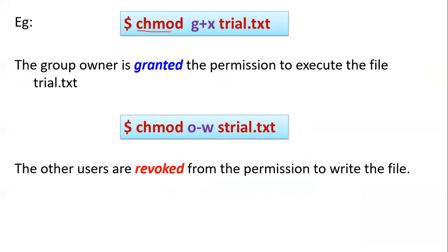Here is an example: chmod g+x trial.x — where g is group owner, plus means grant permission, and x means execute permission. So this grants the group owner execute permission on the file trial.x. In the next example, to remove permission you can use the symbol minus w (write permission), which revokes the other users' permission to write the file.